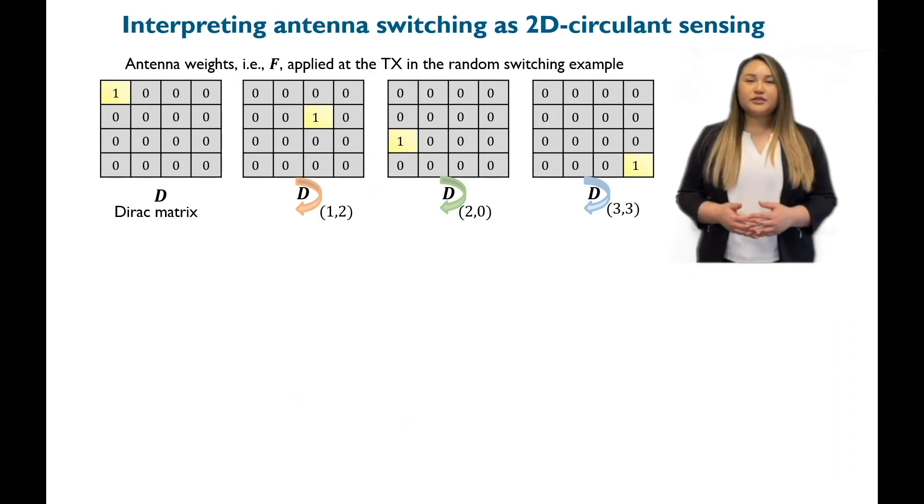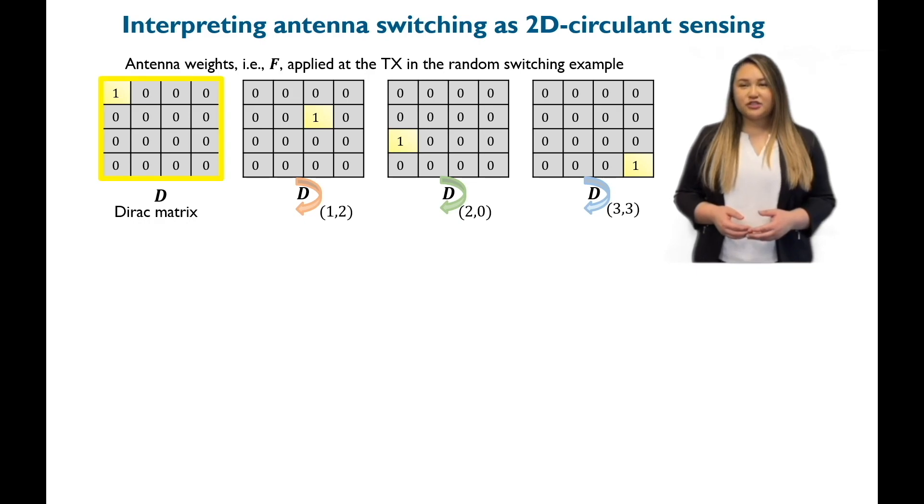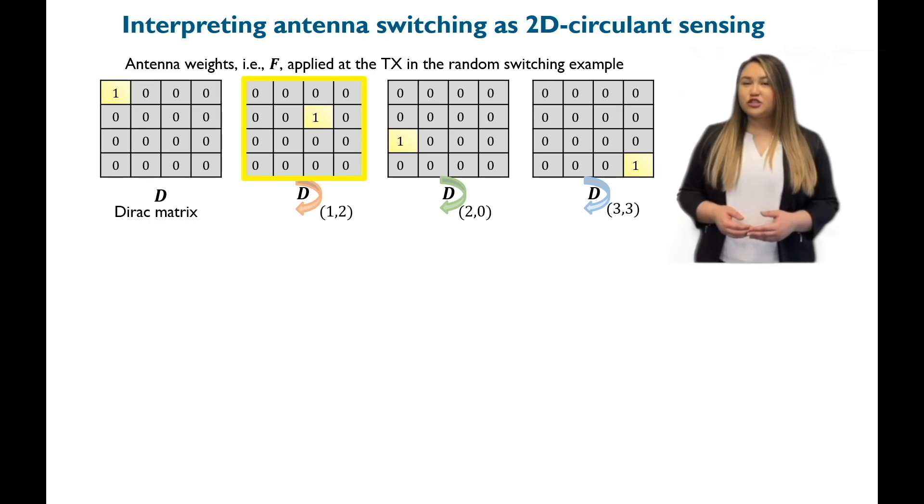Now, I'm going to explain how switching can be interpreted as circulant sensing. In the random switching example, the antenna weights used by the transmitter are Dirac matrices.